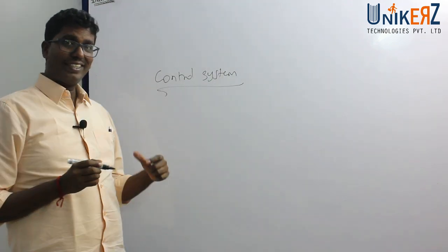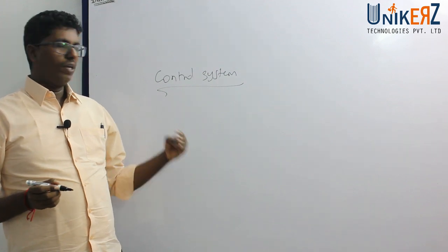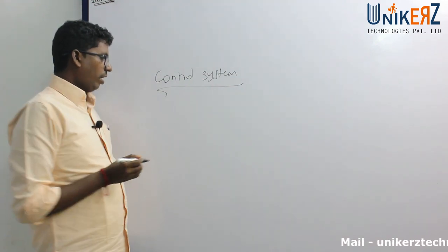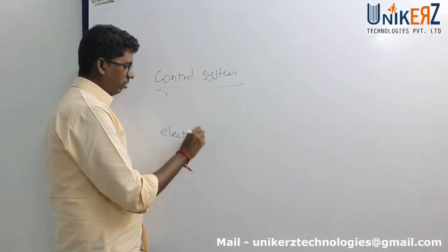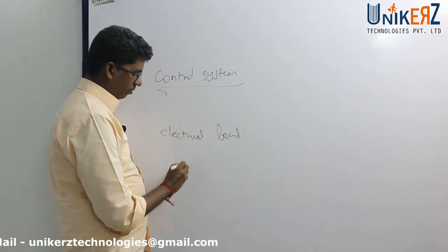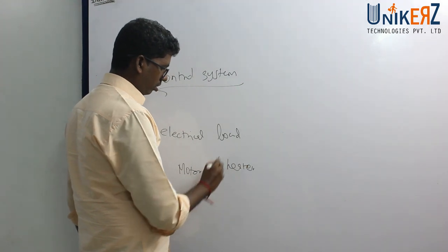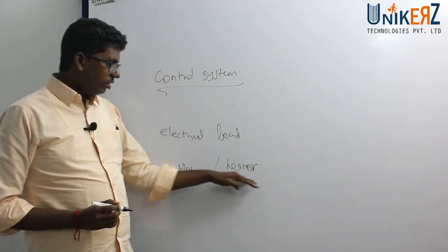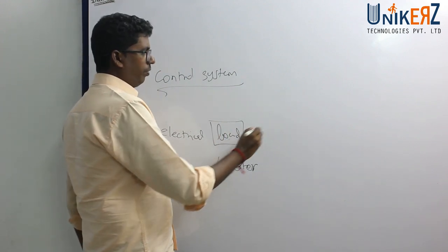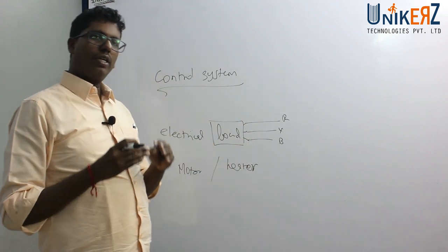I am talking about industry control systems. Any electrical circuit — what is happening? We will use electrical power to do the work, either as an electrical load. How do we control the power? That is the circuit.